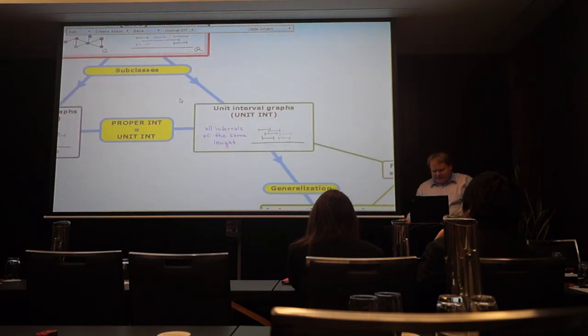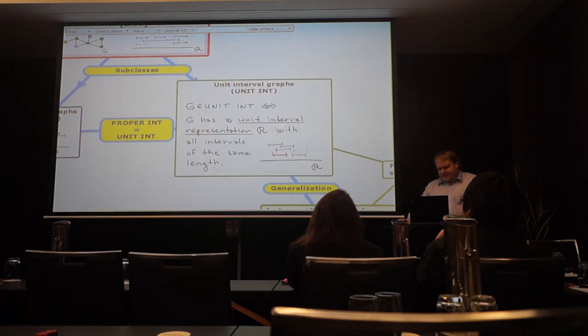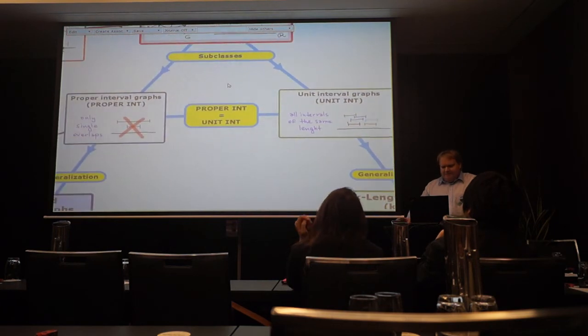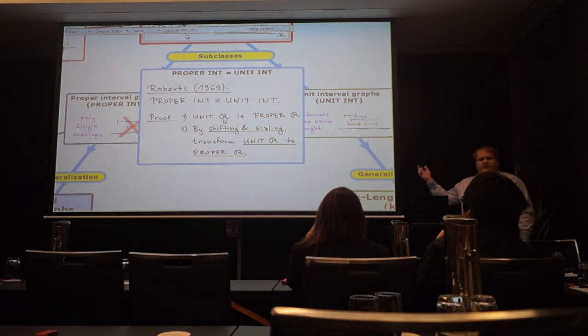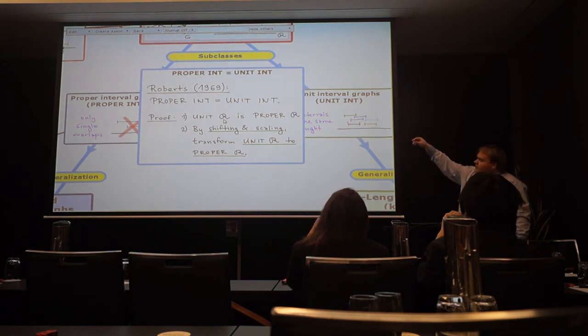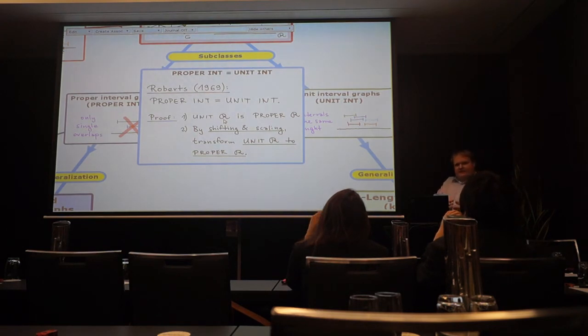And for unit interval graphs this is much easier. You have all intervals of the same length equal one. And the basic relations between these two graph classes is that it is actually one graph class. It was proved by Roberts that every proper interval graph is also a unit interval graph and vice versa. My reaction is quite easy because unit implies proper. The other is a little bit tricky. And also I think in the original proof it is done in the way that it is proved that K1,3 is not a proper interval graph. And then you sort of build it in this way. But you can also do it geometrically. So this is one of the classical results.